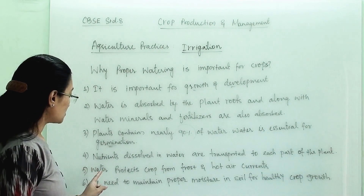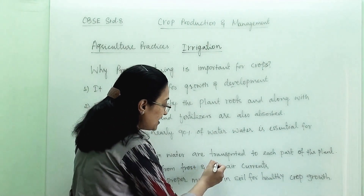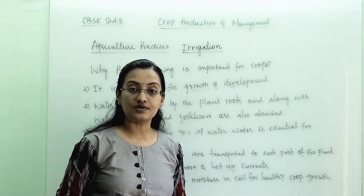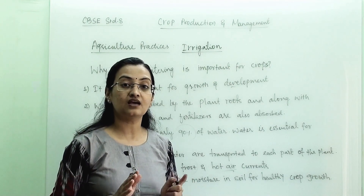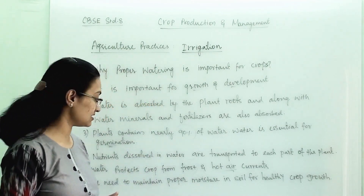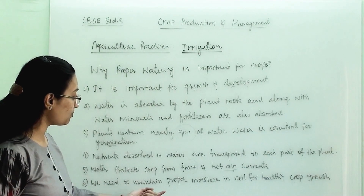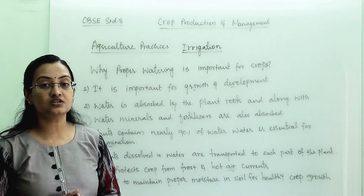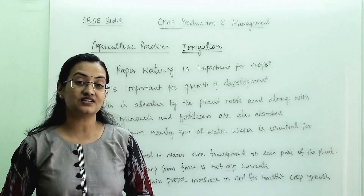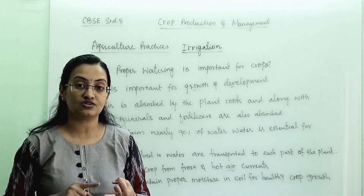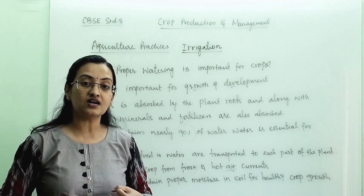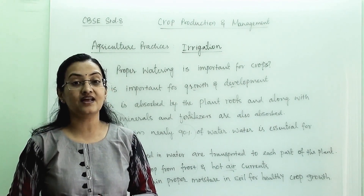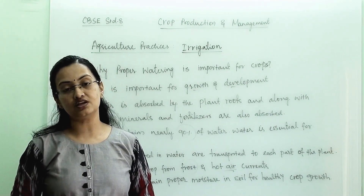Fifth, water protects the crop from frost and hot air currents. When weather conditions are not optimum, water will be helpful for the crop's survival. We need to maintain proper moisture in the soil for healthy crop growth, as water saves plants from extreme hot and cold conditions. That is why water and irrigation are very important.